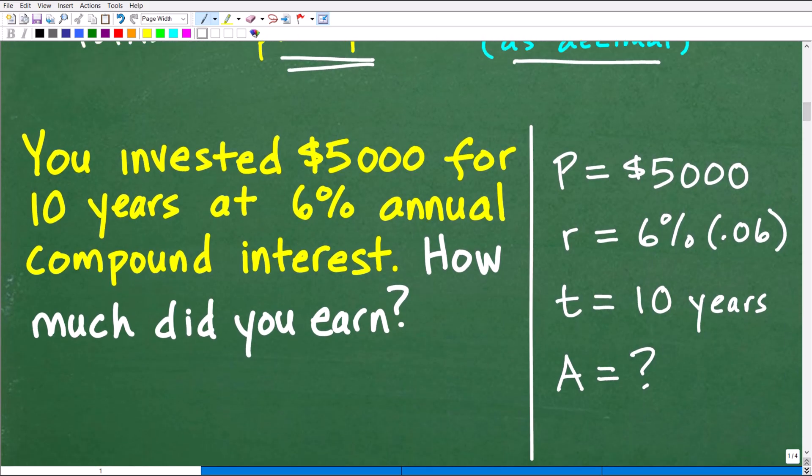All right, so here's the problem. You invested $5,000 for 10 years at 6% annual compound interest. So we got to make sure we understand what is the principal, what is the rate, what is the time. So the principal amount is what you invest. So you invested $5,000. So P is going to be $5,000.